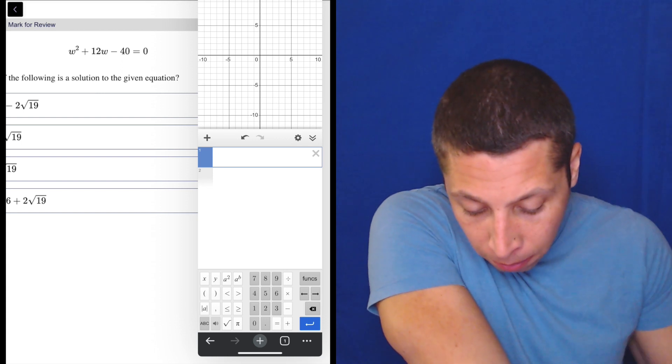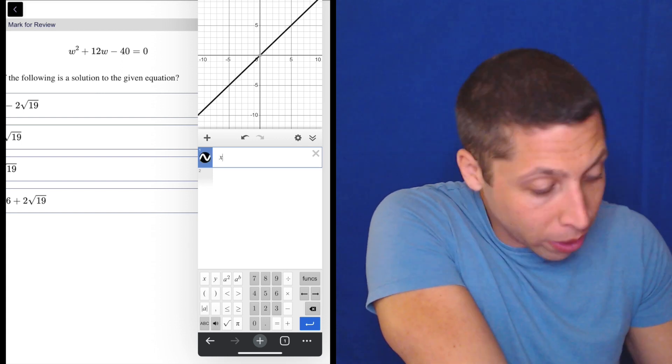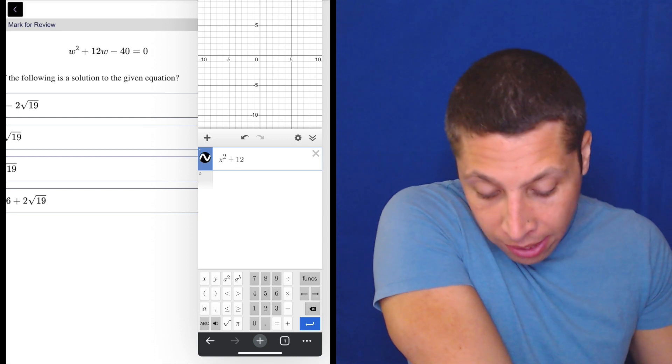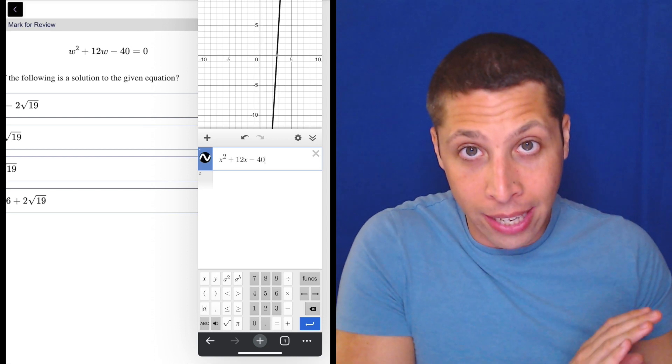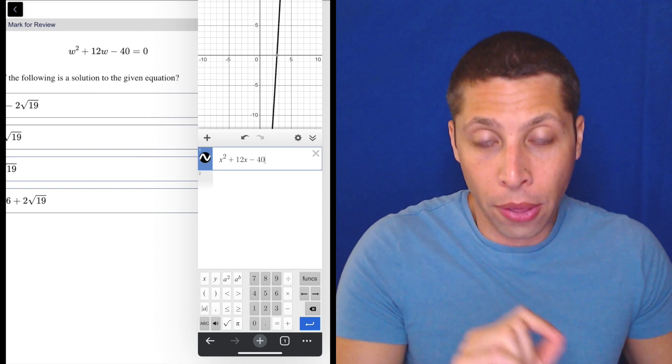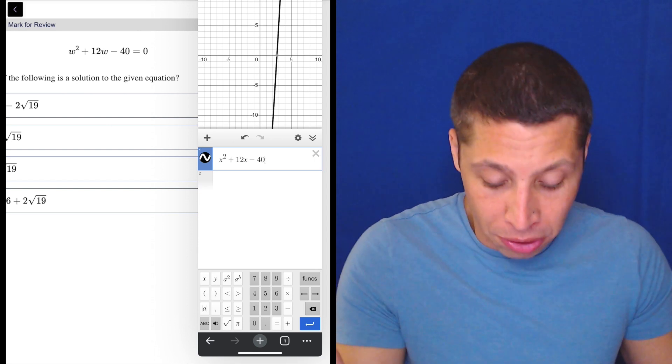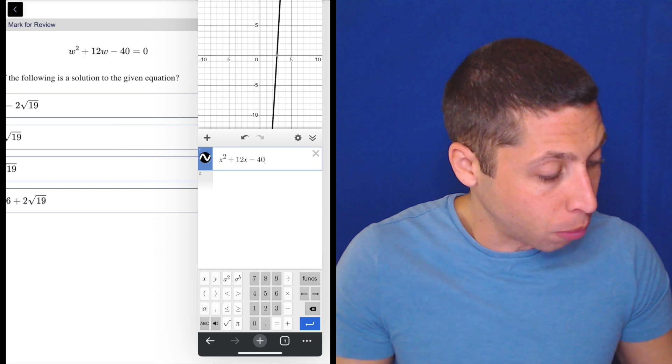So X, let's tap here, X squared, X squared plus 12X minus 40. Now if you keep it like this, what you're gonna get is a parabola with X intercepts. And so the X intercepts are what we care about. But here I'm just gonna go with equals zero.